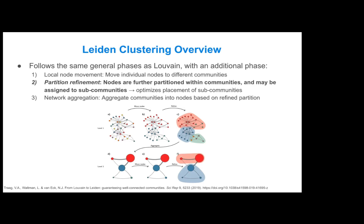For the network aggregation step in Leiden, instead of aggregating the communities directly into nodes, you use the refined partition with sub-communities to aggregate into new nodes. This prevents the situation where sub-communities are disjoint but considered the same community — if a sub-community becomes disconnected, it will move into a new community rather than remaining part of a disconnected one.